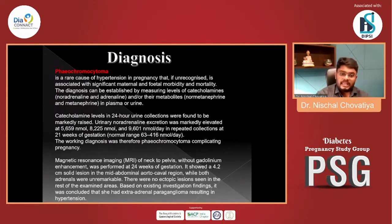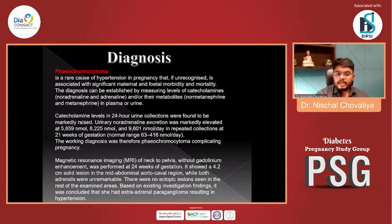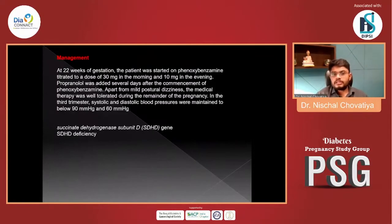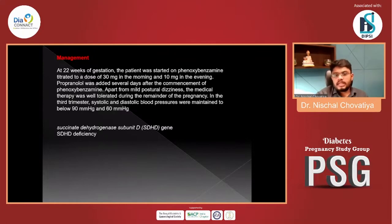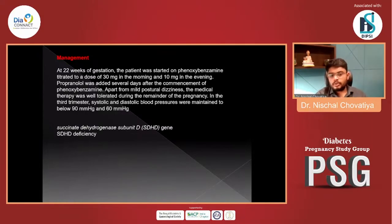MRI pelvis with gadolinium enhancement showed a 4.2 cm solid lesion in the mid-abdominal aortocaval region bilaterally, with no changes in the adrenal gland. Based on these findings, the patient was diagnosed with extra-adrenal paraganglioma causing hypertension. Management: at 22 weeks, the patient was started on phenoxybenzamine titrated to 30 mg in the morning and 10 mg in the evening; propranolol was added several days later. The medical therapy was well tolerated; blood pressure normalized throughout the pregnancy. Genetic study revealed SDHD gene deficiency. After four months post-delivery, the patient was operated on.